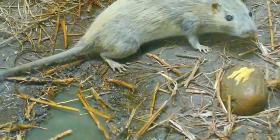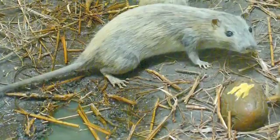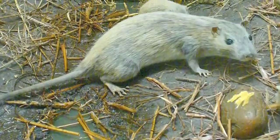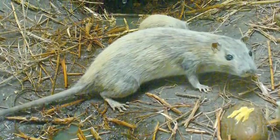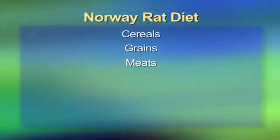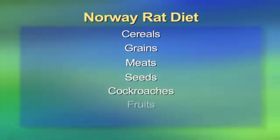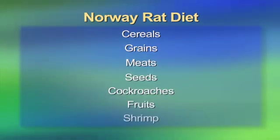The Norway rat is grayish-brown in color and normally 7 to 10 inches in length. Its nesting areas include burrows in soil, sewers, basements, and the lower portion of buildings. The Norway rat's diet consists of cereal, grains, meats, seeds, cockroaches, fruits, and shrimp.